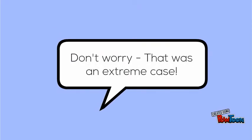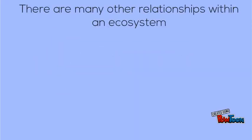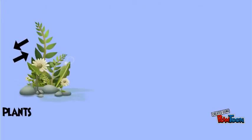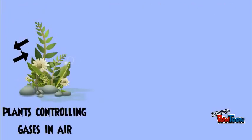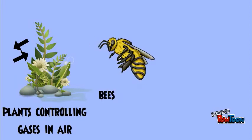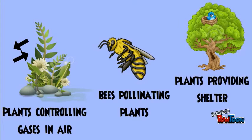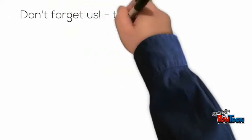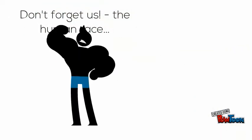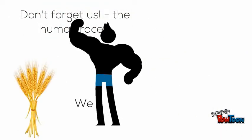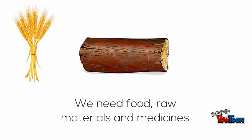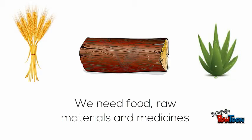Don't panic, that's extreme. Of course, ecosystems have more to them than just a free-for-all food war. Other relationships include plants regulating oxygen and carbon dioxide in the air, bees pollinating plants which is vital for plant reproduction, and plants providing a home for animals. Of course, don't forget the human race. We are hugely dependent on the natural world too. We need food to eat, raw materials to build homes and make clothing, and medicine to keep us healthy.